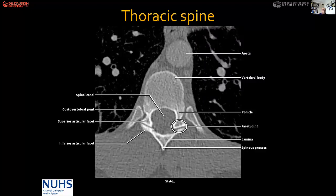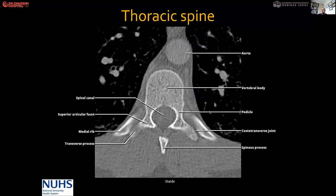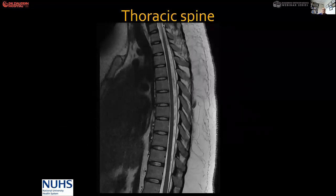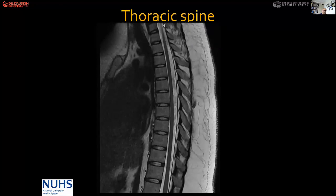This is the MRI of a thoracic spine. You can see vertebral bodies joined with the discs, the overhanging spinous processes, and the interspinous ligaments.